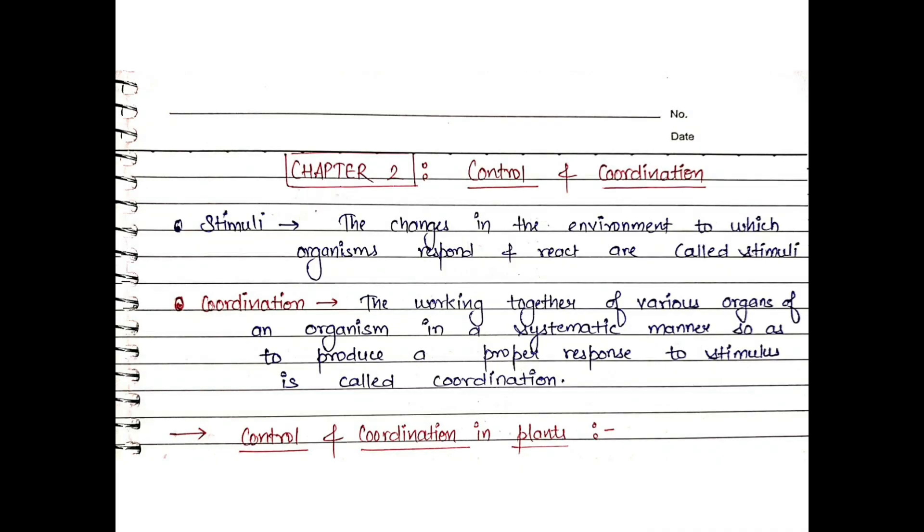Hi everyone, welcome to BioEase. Today we are going to start with our second chapter of Class 10, that is Control and Coordination. Control and coordination means how body activities are controlled, how organs in our body are present, and how they coordinate with each other.